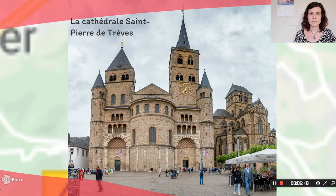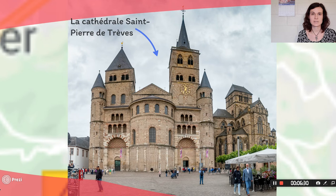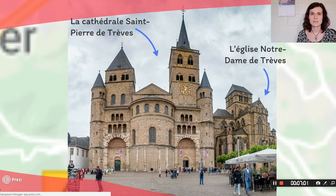To the right you can see the Church of Our Lady, built in the 13th century in the Gothic style. The first main difference is the façade of the two churches. You can see that the façade of the Romanesque cathedral is more austere, almost like the fortified façade of a castle. On the other hand, the façade of the Gothic church has many decorative elements and sculptures. Here you can see a detail of the Gothic façade.